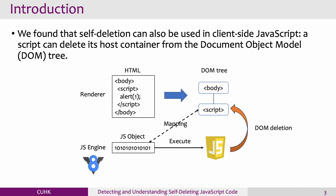We found that self-deletion can also be used in client-side JavaScript. When the web page's JavaScript code is parsed into a DOM tree, it is mapped to a JavaScript object and executed in the browser's JavaScript engine later. Once a script starts execution, the original source code contained in the web page can be deleted.